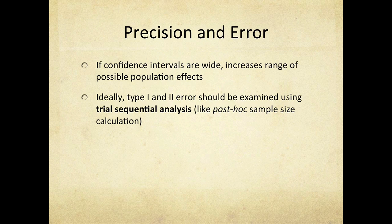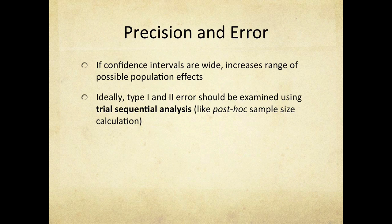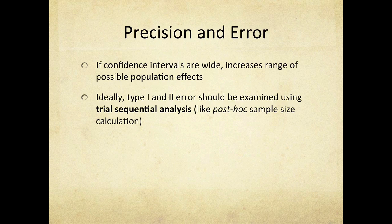Precision relates to how narrow your confidence intervals are. Very wide confidence intervals mean the result can include quite a range of population effects, decreasing certainty. You also want to look at whether the effect estimate is clinically significant — for example, in postoperative pain meta-analyses, you'd want pain score reductions at a clinically meaningful level. Additionally, just as in primary studies, you can get type 1 and type 2 errors in meta-analyses.